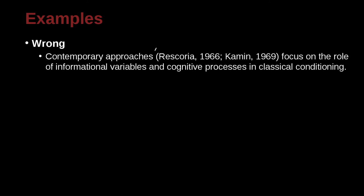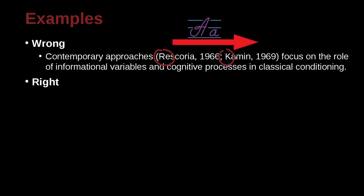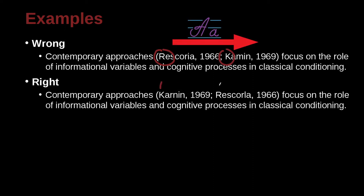Contemporary approaches — Roscoora, 1966; Common, 1969 — focus on the role of informational variables and cognitive processing in classical conditioning. So what's the problem here? This looks pretty good, right? We have a name, comma, a year, semicolon — semicolon separates two different authors, then author comma year. That actually looks pretty good, right? But we come into the problem of who goes first and who goes second. Remember that for multiple different papers by different authors, we need to use alphabetical order of the name. K is before R.